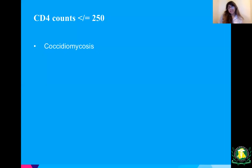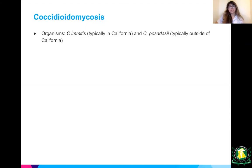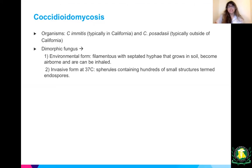Now I'll divide this lecture by CD4 count, going from highest to lowest. At CD4 count less than or equal to 250, the infection to watch out for is coccidioidomycosis. The organisms are C. immitis and C. posadasii — C. immitis is typically in California, and C. posadasii is outside of California. Coccidioidomycosis is a dimorphic fungus with two forms: the environmental form is filamentous with septated hyphae that grows in soil, becomes airborne, and can be inhaled.